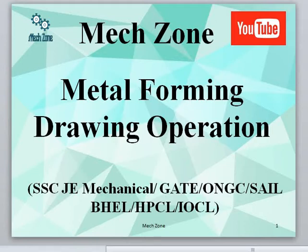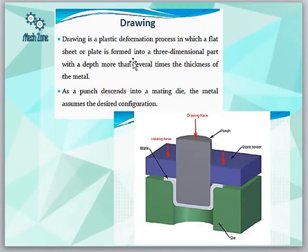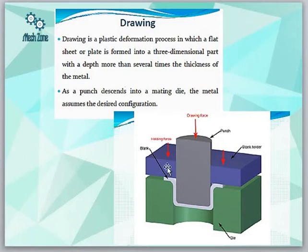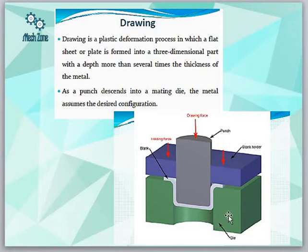To start with, we will first discuss what drawing actually is. It is a type of plastic deformation — plastic meaning permanent deformation — in which a flat plate or sheet is formed into a 3-dimensional object such that the depth of the object is much greater compared to the thickness of the material. A simple metallic sheet or plate is pressed by means of a ram and takes the shape of the die cavity, such that the depth is very much higher compared to the thickness of the resulting object.